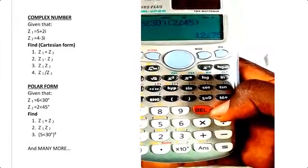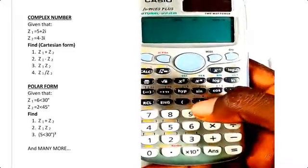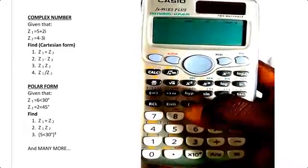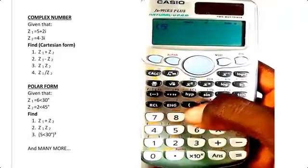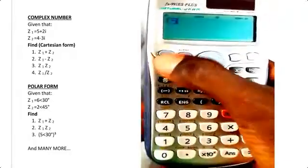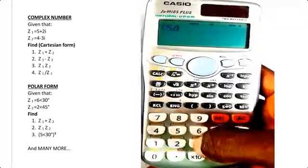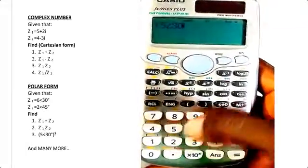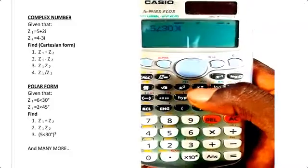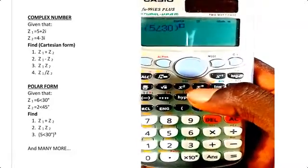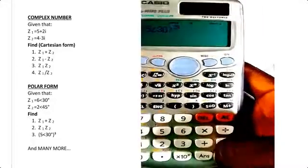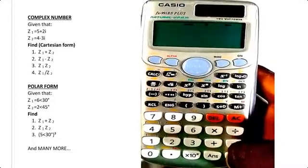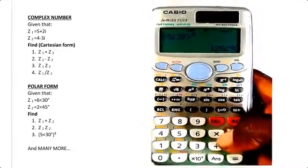Open bracket 5 Shift angle 30 degrees close bracket, raise to power—this power button—raise to power 3, equals. That's your answer without you undergoing all the stress that you would normally have.